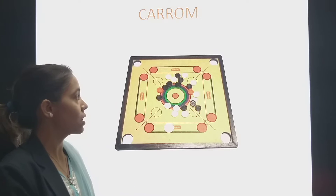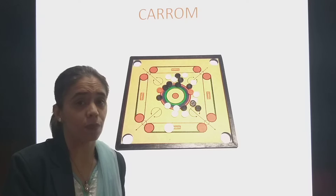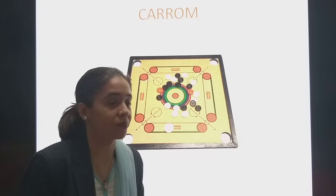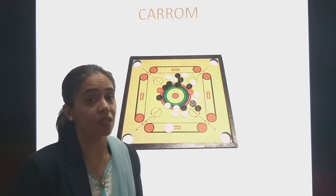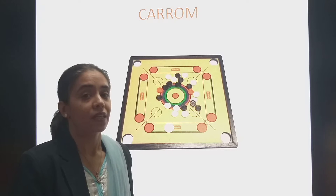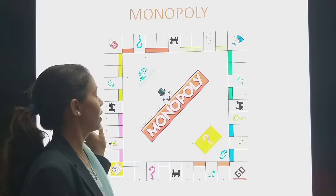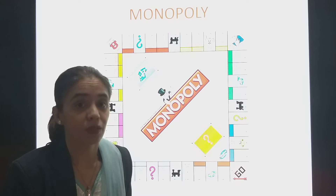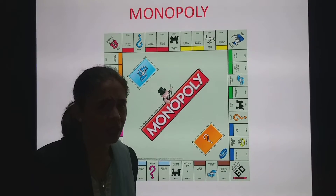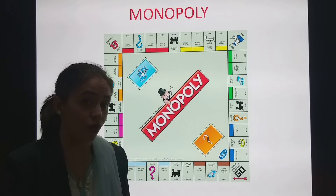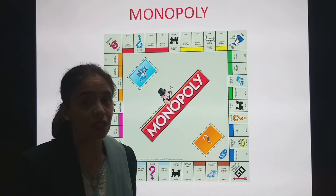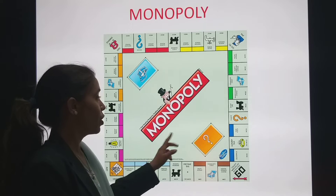Then the next is Carrom — everyone likes this one so much, it's everyone's favorite game, even mom's favorite. So which game is this? Carrom. C for Carrom. Then Monopoly. Which game is this? Monopoly. You've all played it and enjoyed it. M for Monopoly.